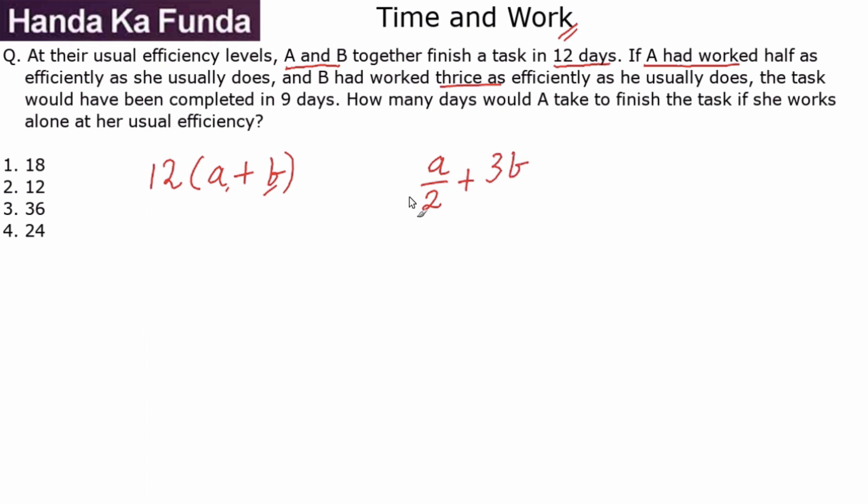So together they did a/2 plus 3b units of work. If they did this, then the task would have been completed in 9 days. So this means that the amount of work done in 9 days by a/2 and 3b is the same as the amount of work done by a plus b in 12 days.